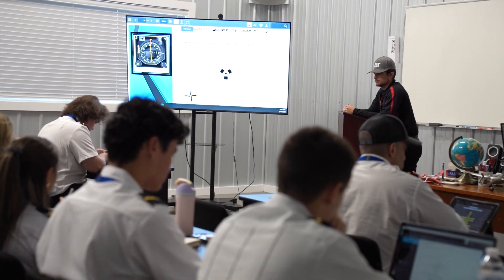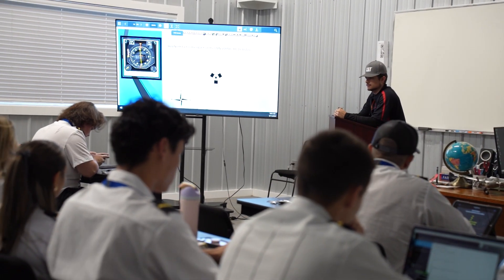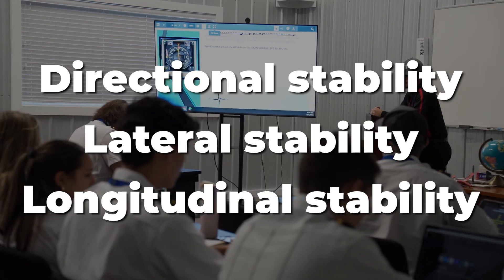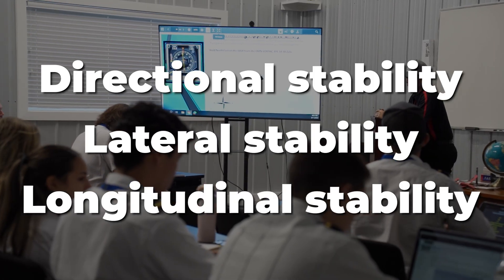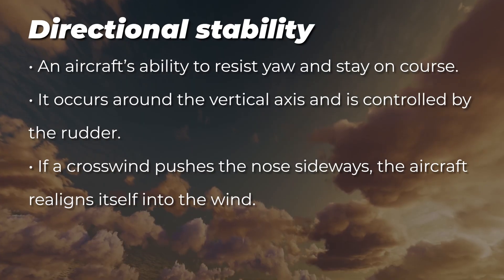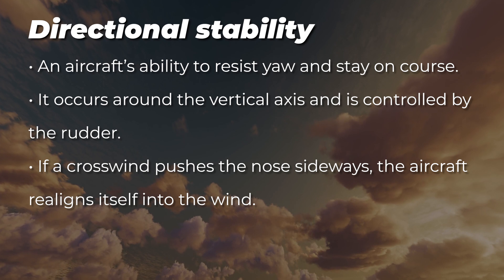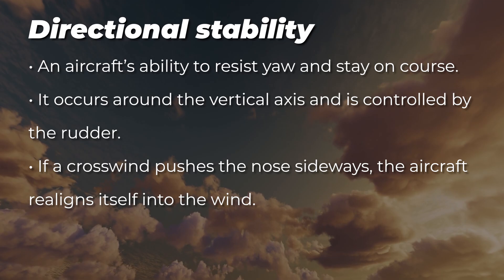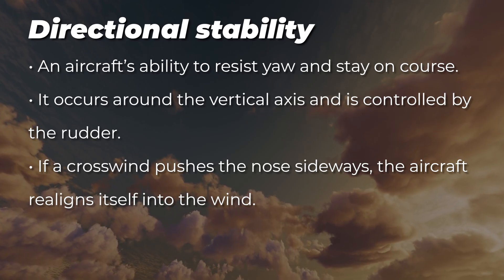In EPIC's ground school, pilots learn about the three types of stability: directional, lateral, and longitudinal. Directional stability is an aircraft's ability to resist yaw and stay on course. It occurs around the vertical axis and is controlled by the rudder. If a crosswind pushes the nose sideways, the aircraft realigns itself into the wind.